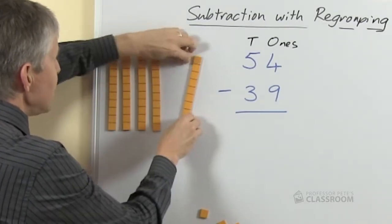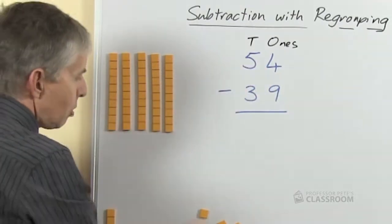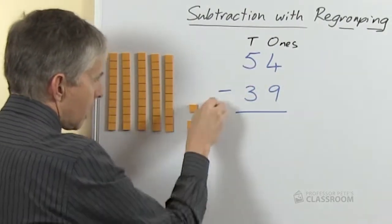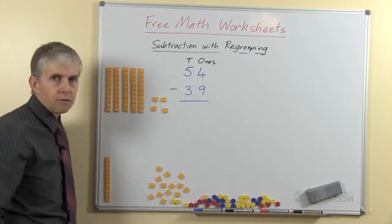We'll always put the tens on the left hand side because that's where they are when we write them down. Here are my ones and you can see that's 54, 5 tens and 4 ones.